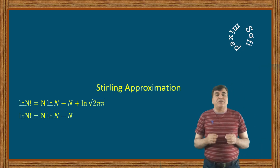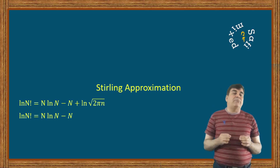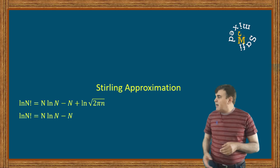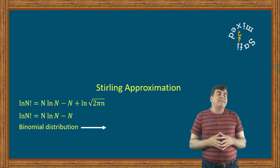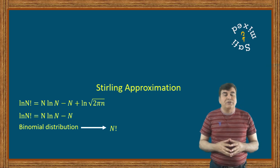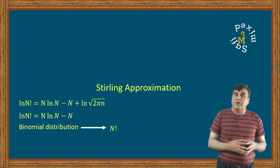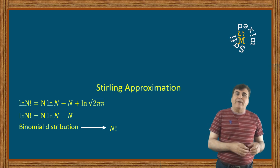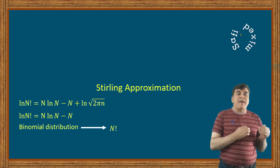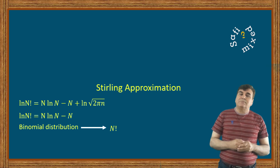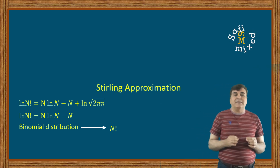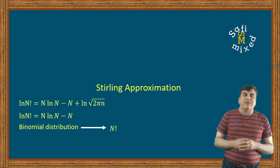In statistical mechanics, we deal with distribution of particles in different available microstates, and such distributions involve the coefficient of binomial distributions which take the form of n factorial. n in this case refers to the number of particles. In a thermodynamical system, this n is usually very large, of the order of 10 raised to the power 24. Therefore, calculating n factorial for very large numbers is a difficult task. Fortunately, there exists an easy approximation to tackle this problem analytically, and that easy approach is named Stirling approximation.